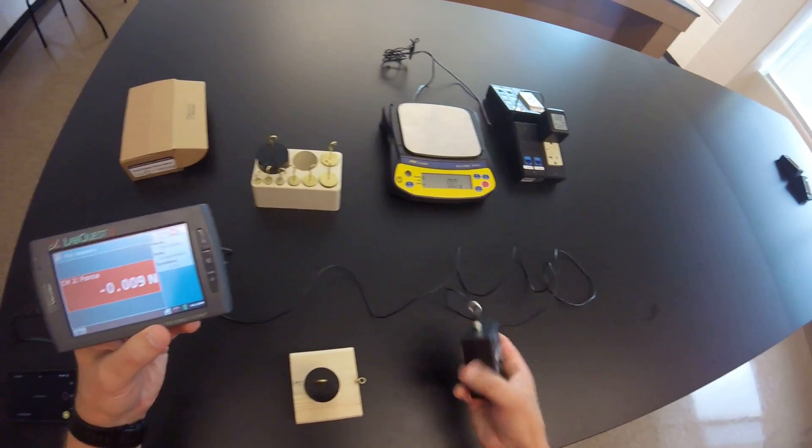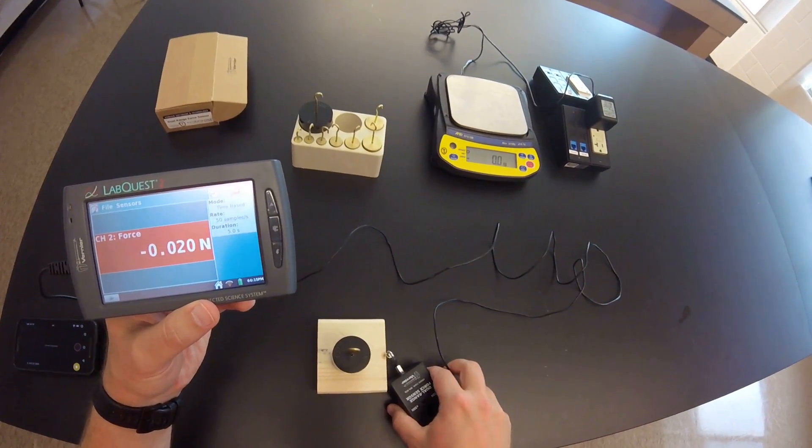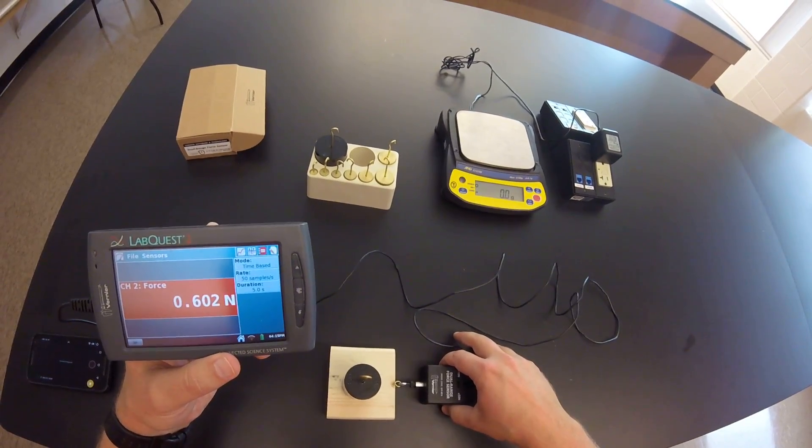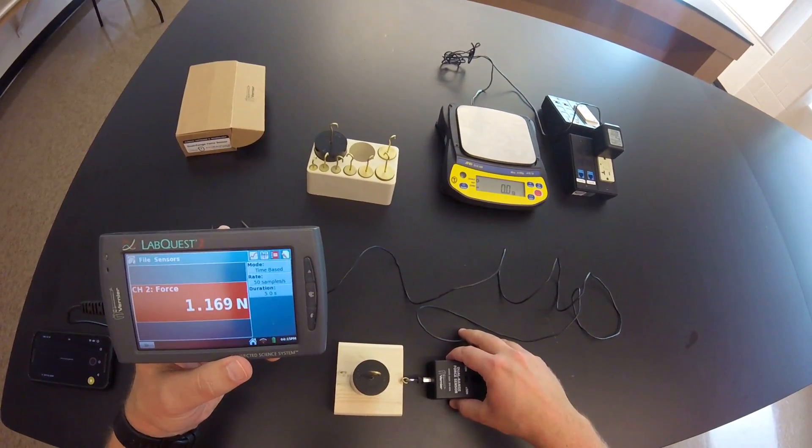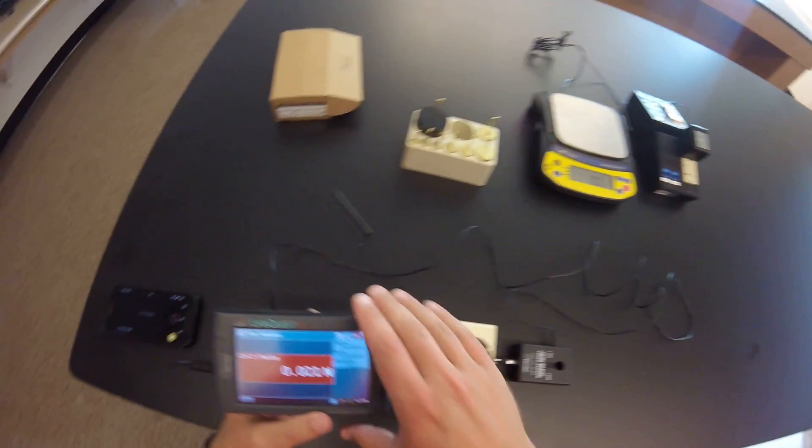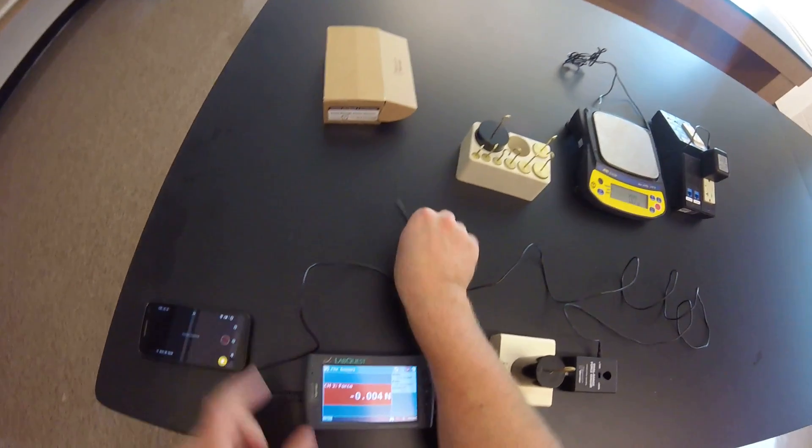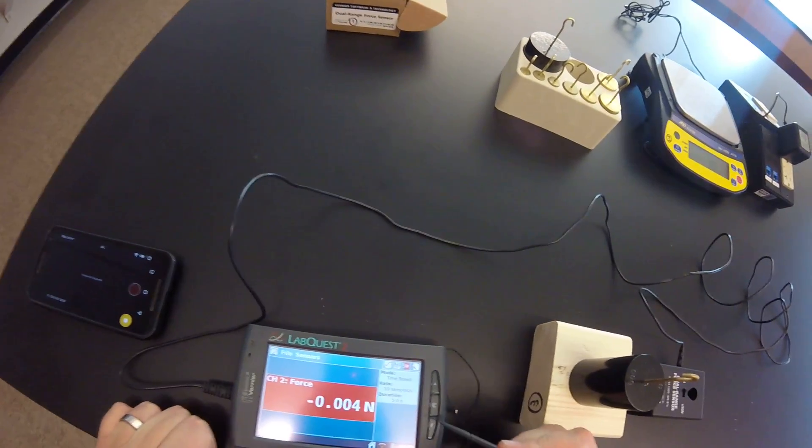I'm going to place the hook of my force sensor into the loop of the block, and when I pull, I'm going to be sure to pull at a constant speed. When I am ready, I'm going to press play, and begin my pull.